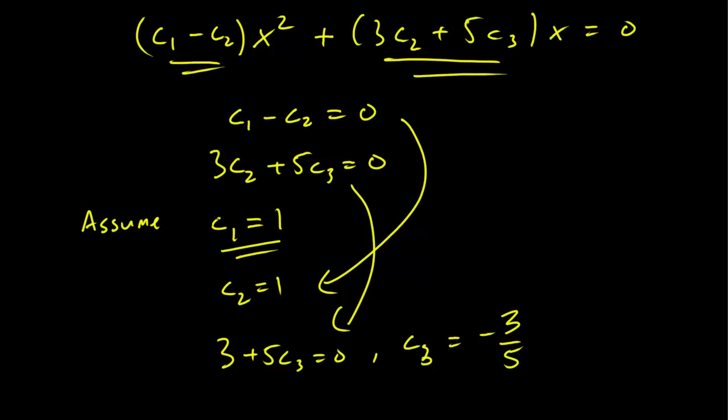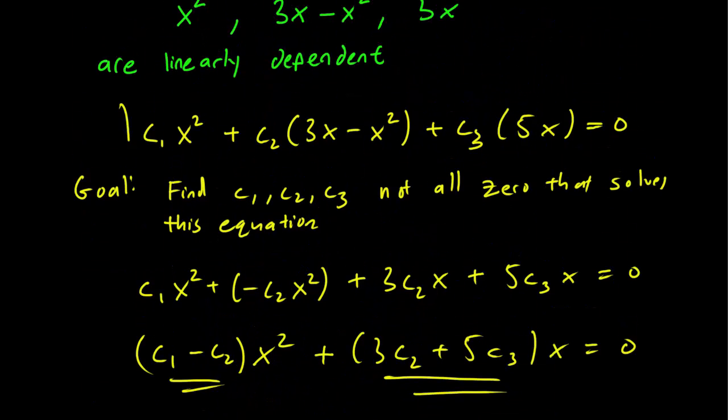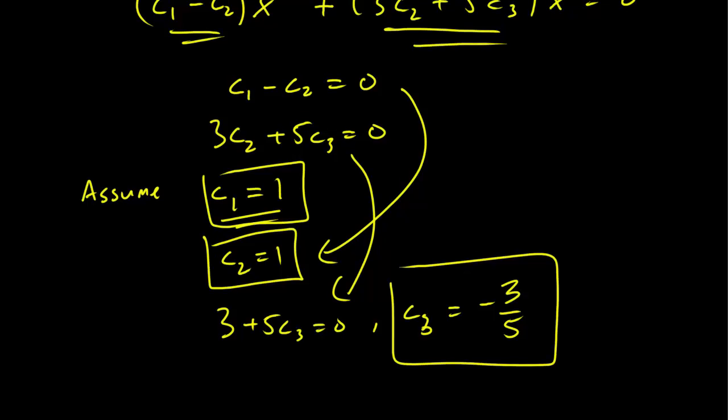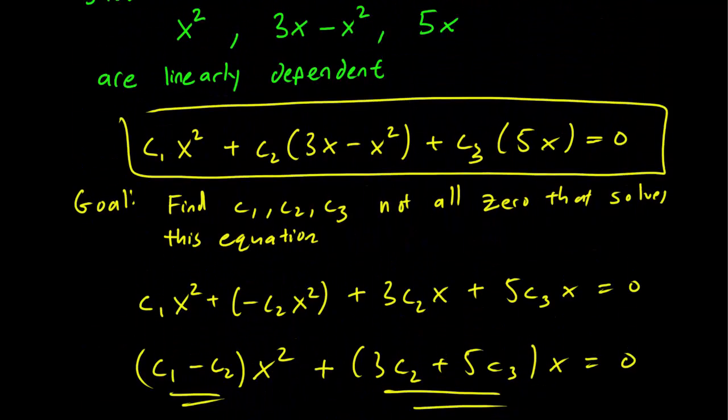So here we have it. We have c1, c2, and c3, which make the original equation zero, and such that c1, c2, c3 are not all zero. Now, if you end up with one zero or even two of the constants zero, that's fine, as long as not all of them are zero. And this is enough to show linear dependence.